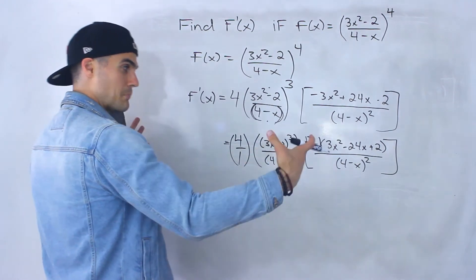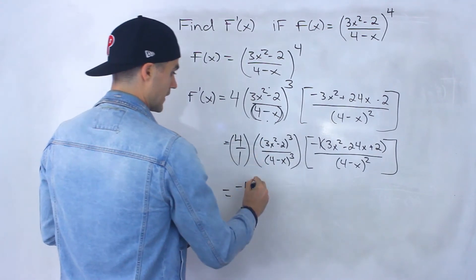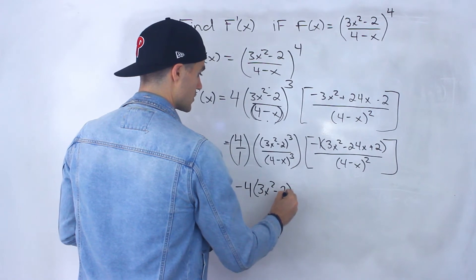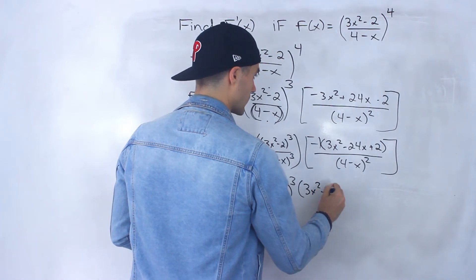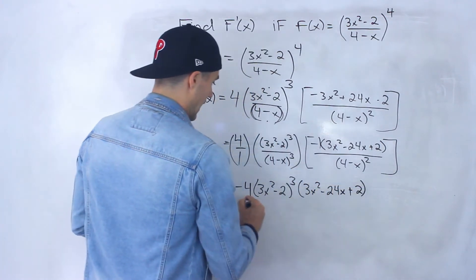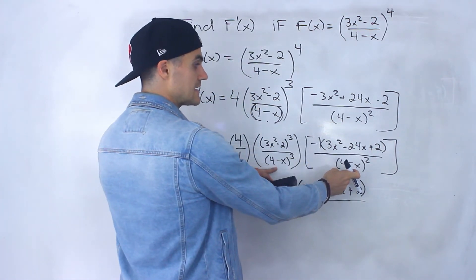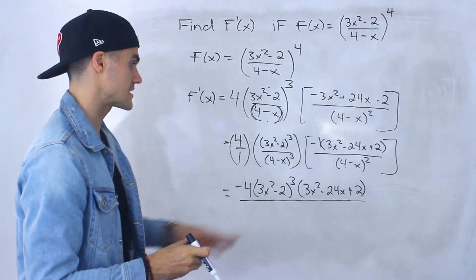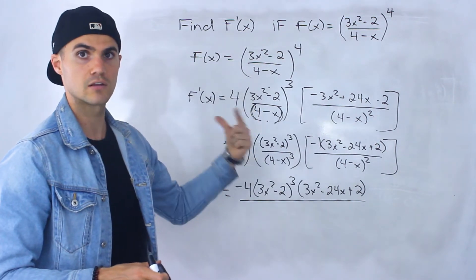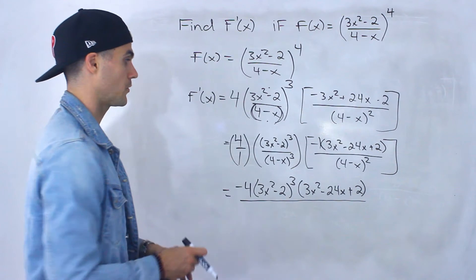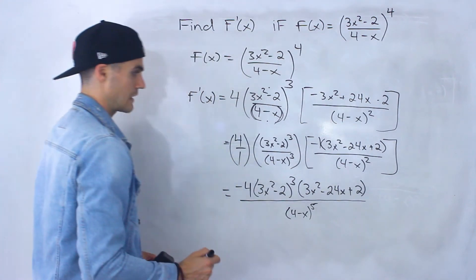So now I'm going to combine this all into one fraction. Negative 1 times 4 gives a negative 4 up top, then we have 3x squared minus 2 to the power of 3, and then the factor 3x squared minus 24x plus 2. This is all over 1 times the two denominator factors. Notice these are two exponents multiplying with the same base — both have base 4 minus x — so by exponent rules you add the exponents, giving 4 minus x to the power of 5.